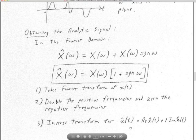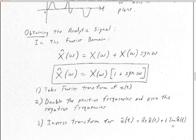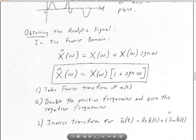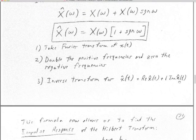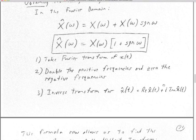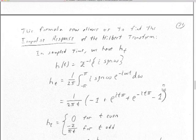We just inverse transform from frequency to time and get a complex signal. If we just inverse transformed the Fourier transform of X, the imaginary part would be zero. But that doesn't happen with the analytic signal — we end up with a very much non-zero imaginary part, because we've essentially filtered it in the frequency domain by this one plus signum.